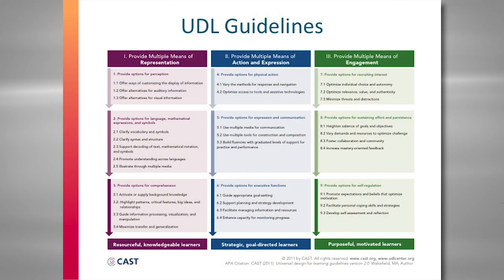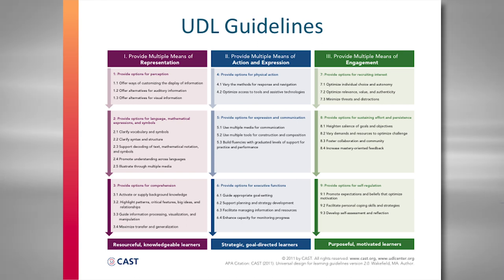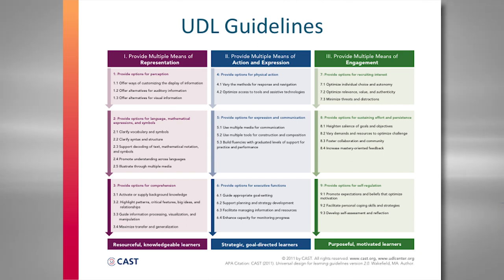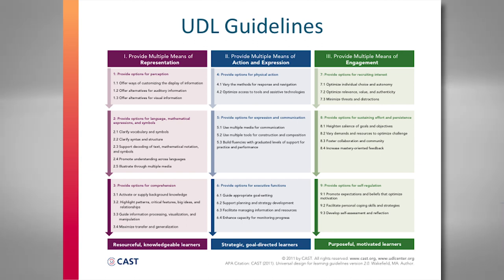Out of that comes the Universal Design for Learning Guidelines, based on over 800 peer-reviewed articles. The first principle: provide multiple means of representation, given that people perceive information differently. The second: provide multiple means of action and expression, given that how people get there is different. The third: provide multiple means of engagement, given that people are motivated in different ways.